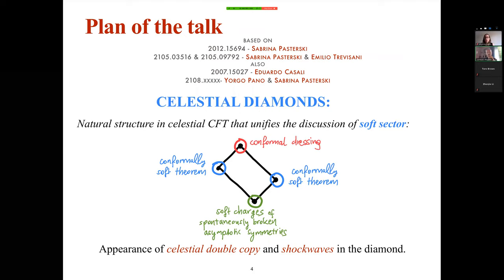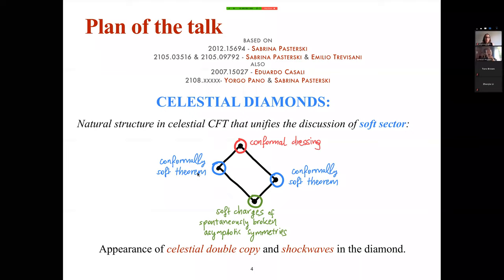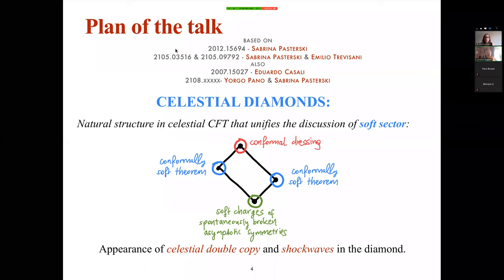The plan of this talk is to discuss a natural structure that occurs in celestial CFT which unifies soft physics. There will be a diamond-shaped structure whose corners give rise to the celestial analog of soft theorems, the associated soft charges of asymptotic symmetries spontaneously broken by the vacuum, and conformal dressings for celestial amplitudes. Along the way, we uncover a celestial analog of the double copy in both perturbative and classical forms, and finite backgrounds such as ultra-boosted black holes and shockwaves appear in this diamond structure. This is based on three papers with Sabrina Pasterski, Emilia Trevisani, Eduardo Casali, and collaborators.